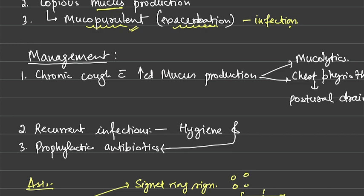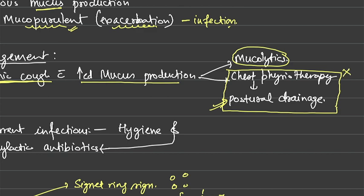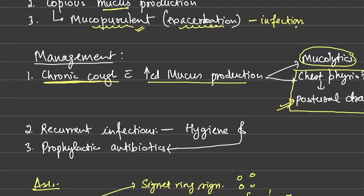For management, the patient has chronic cough with increased mucus production, so mucolytics are very beneficial. Even more beneficial than mucolytics is chest physiotherapy, particularly postural drainage — positioning the patient so that mucus drains automatically from deep in the lungs. Postural drainage is very beneficial in bronchiectasis patients.